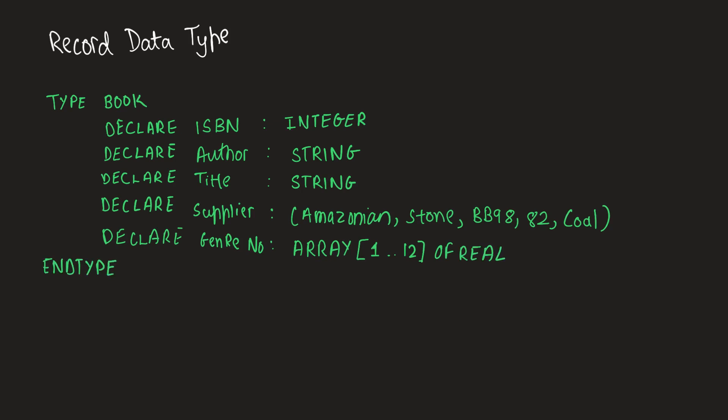We have defined a record data type. The name of the data type is book, and there are several fields — or identifiers — within the record data type. As you can see, they are of several data types: we have integer, strings, a list, and an array as well. We have used appropriate data types everywhere — ISBN code has to be an integer, author name has to be a string, and so on.